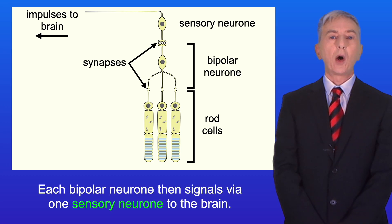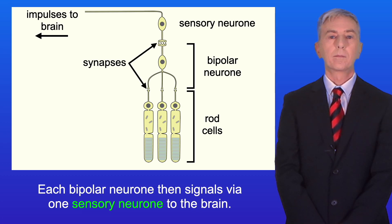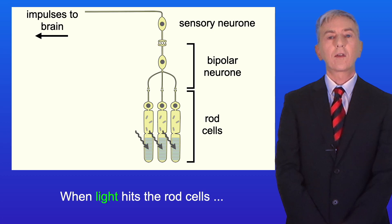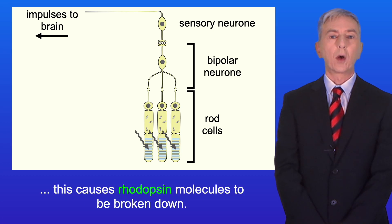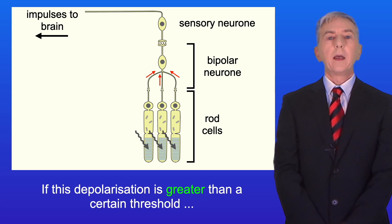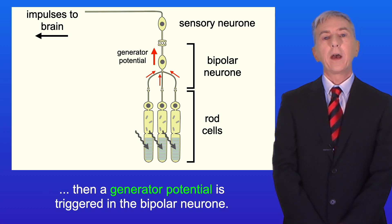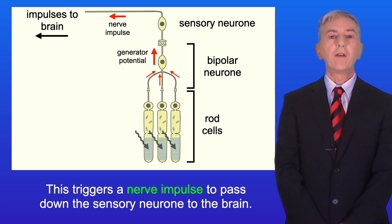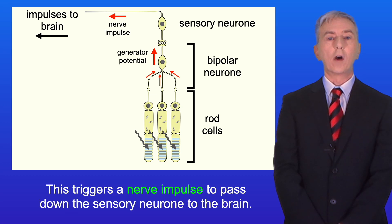Each bipolar neuron then signals via one sensory neuron to the brain. Each rod cell contains a light-sensitive pigment called rhodopsin. When light hits the rod cells, this causes rhodopsin molecules to be broken down. The rod cells then cause the bipolar neuron to depolarize. If this depolarization is greater than a certain threshold, a generator potential is triggered in the bipolar neuron, which triggers a nerve impulse to pass down the sensory neuron to the brain.